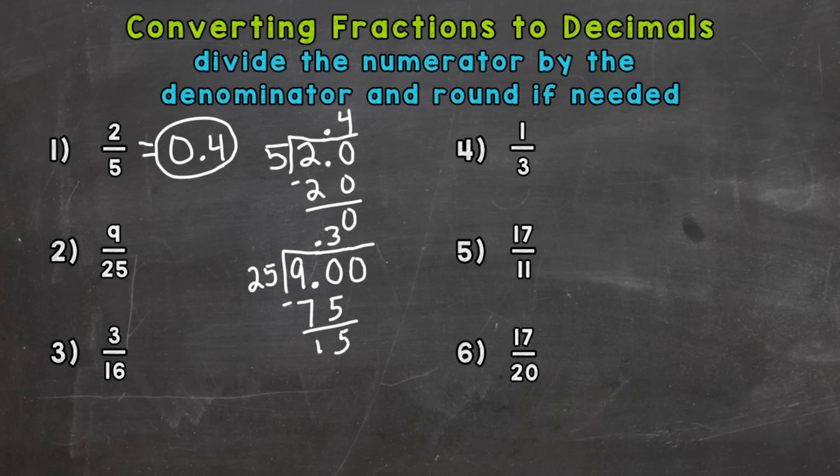A zero to the right of a decimal doesn't change the value. So we're not changing the problem at all. Now we can bring that zero down. And we have 150 divided by 25. And we can pull 6 whole 25s out of 150. 6 times 25 is 150. And we get that clean cut zero. So we are done. Our answer is 36 hundredths. So 9 twenty-fifths is equal to 36 hundredths.